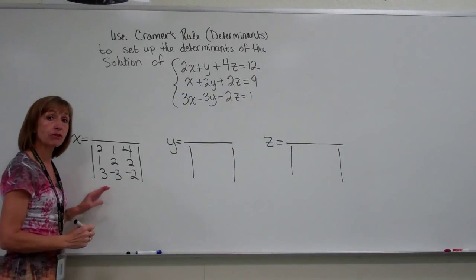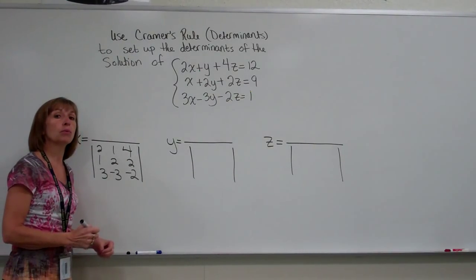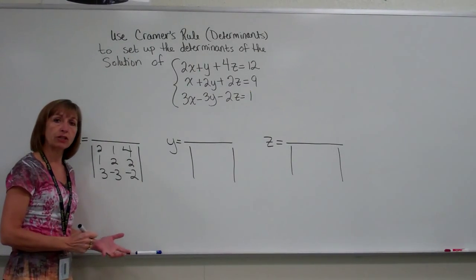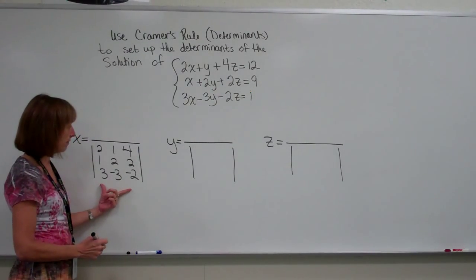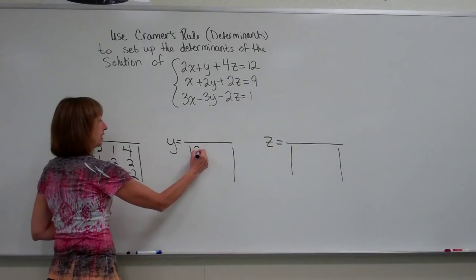Now if there's a variable that's missing in one of those equations, then you would use a coefficient of 0 for that variable term that's missing. So we have that for each of our denominators.